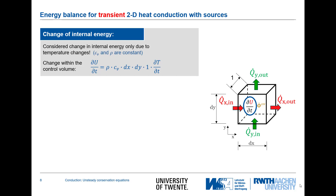In the energy balance, it is the change of internal energy that matters. For constant properties (Cv and ρ), the change of internal energy in the two-dimensional control volume (dx·dy·1) equals density times the mass-specific heat capacity at constant volume times the temperature change over time — dT/dt. This is the quantity we must consider in the energy balance.